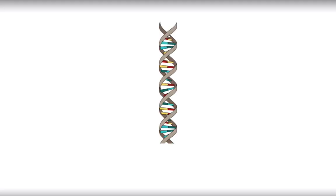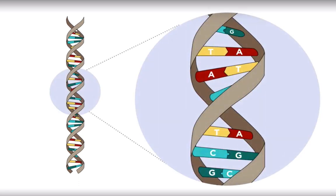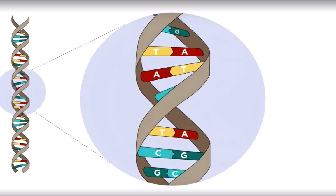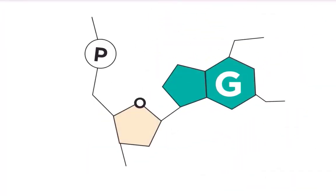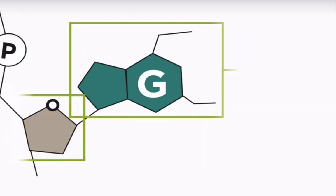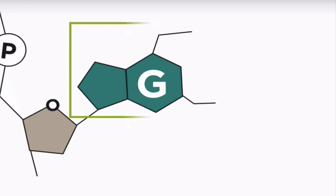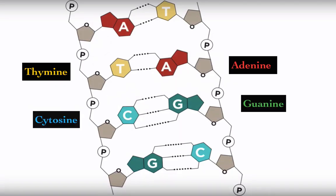A single DNA molecule is shaped as a double helix made of two strands of nucleotides that are bonded together. Each nucleotide consists of a phosphate group, a sugar or ribose sugar, and a nitrogen base. The bases are thymine, adenine, guanine, and cytosine.